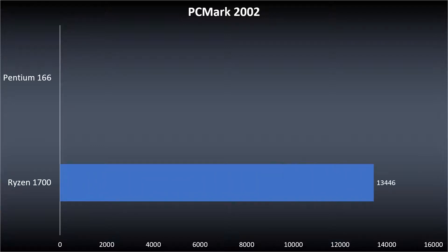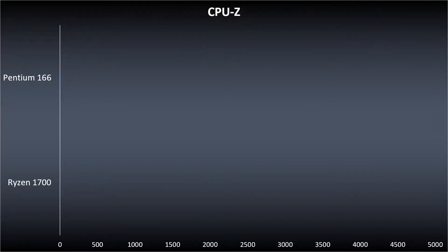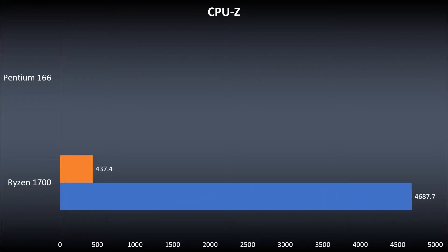In PCMark 2002, my Ryzen scored 13,446 and the Pentium scored 313 — so you can see the huge gap in performance between the two. In CPU-Z, the multi-threaded performance for my Ryzen was 4,687.7 and single-threaded was 437.4. The Pentium's multi-threaded performance scored a 5 and single-threaded scored a 6.